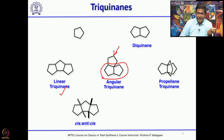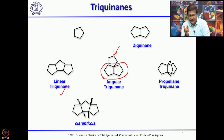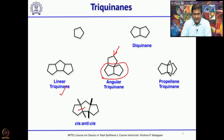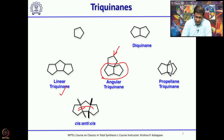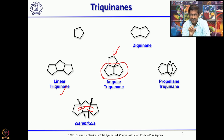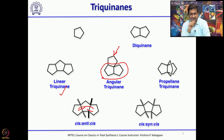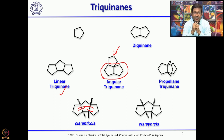When talking about linear triquinines, there are 2 types: cis-anti-cis and cis-syn-cis. In the cis-anti-cis system, the relationship between the first and second rings is cis, between the first and third ring is anti, and between the second and third ring is cis. When you look at many natural products belonging to linear triquinines, you will see both skeletons present.